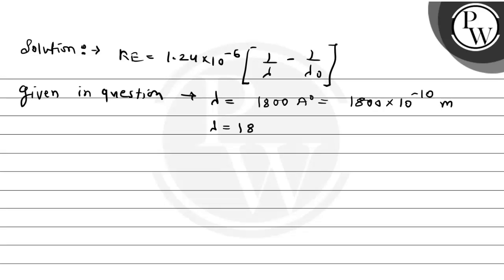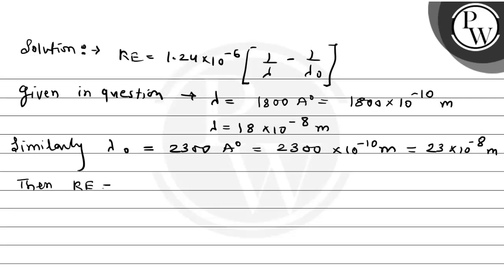Similarly, lambda not equals 2300 angstrom, which equals 2300 into 10 to the power minus 10 meter, which finally equals 23 into 10 to the power minus 8 meter.